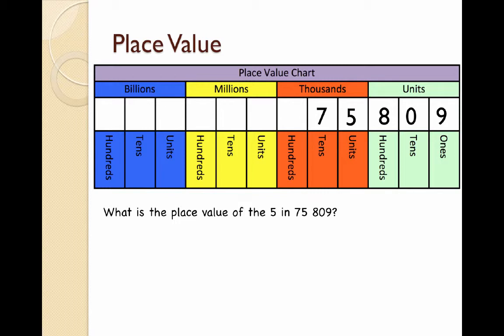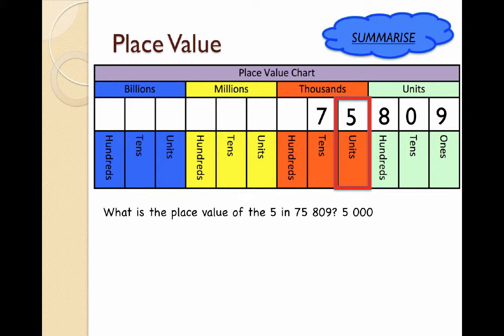I'm going to put this 75,809 into my place value chart, and note that the 5 is in the thousands column. That means that the place value of the 5 is 5,000. Get this example down so that you can refer to it when you're working on your own independent learning.